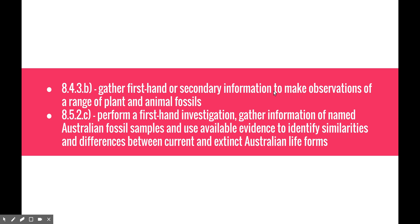The next video in the evolution topic is going to look at two dot points. One from Life on Earth, which is 8.4.3b: gather first-hand or secondary information to make observations of a range of plant and animal fossils. The second dot point is from the Evolution of Australian Biota topic, 8.5.2c: perform a first-hand investigation, gather information of named Australian fossil samples and use available evidence to identify similarities and differences between current and extinct Australian life forms. The reason we've put these two dot points together is hopefully fairly obvious.